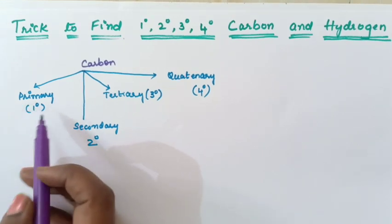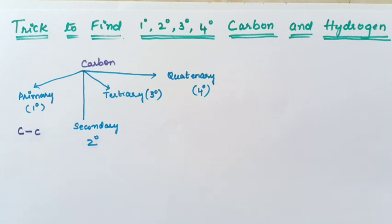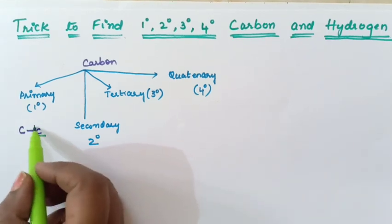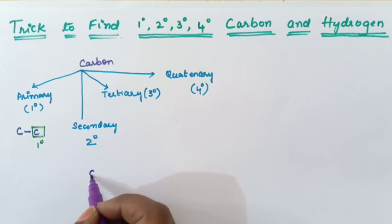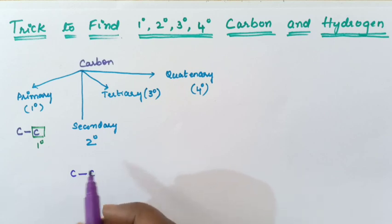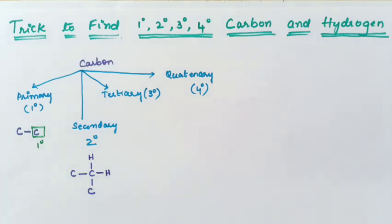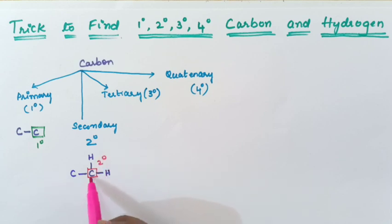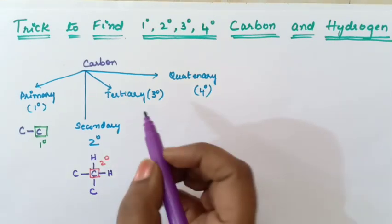Primary carbon means if the carbon is connected to only one carbon, then it is called as primary carbon. What is secondary carbon? If the carbon is connected to two other carbons — one and two — the other two bonds can be satisfied by hydrogen or halogens. So this carbon is a secondary carbon because it is connected to two other carbon atoms.